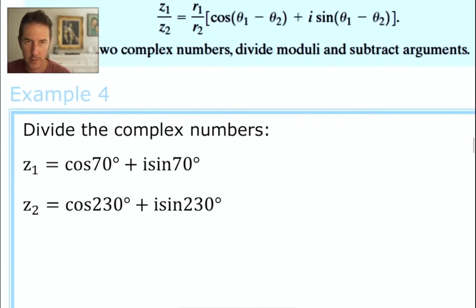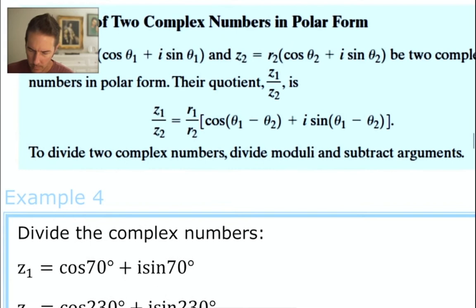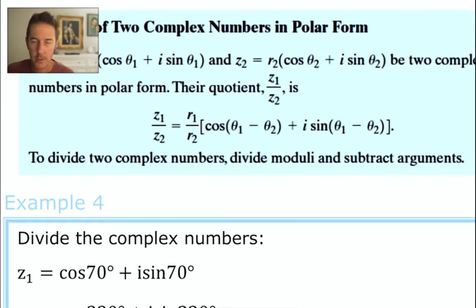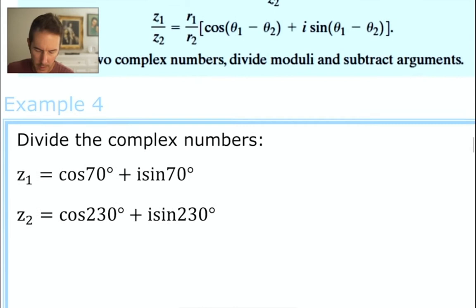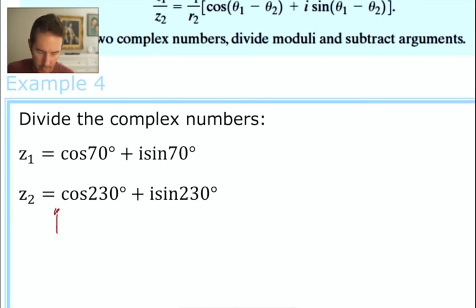Nice. We're given our complex numbers already in polar form. I do have one issue though. Normally, look at this, this says z1 equals r1 cosine theta 1. See the r1? See these parentheses that are here? Look down here at these complex numbers. I don't see an r value in front of these, and I don't see any parentheses wrapped around these. What's my r value?